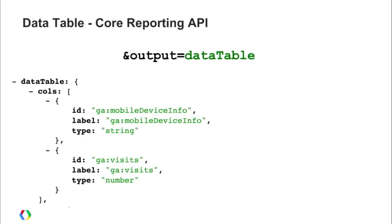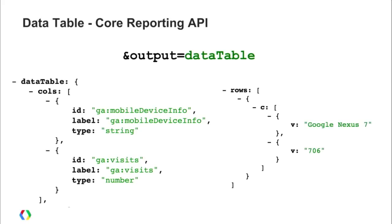With the data table output, instead of a rows object in the response, you get a new 'dataTable' object containing two lists: a columns list with IDs, labels, and column header info, and a rows list with your data — all in the data table format. The key benefit is that you can extract this data table object and feed it directly into Google Charts visualizations — pie charts, column charts, and all the available chart types — and it just works. This makes it much easier to go from querying data to getting it displayed in a chart.